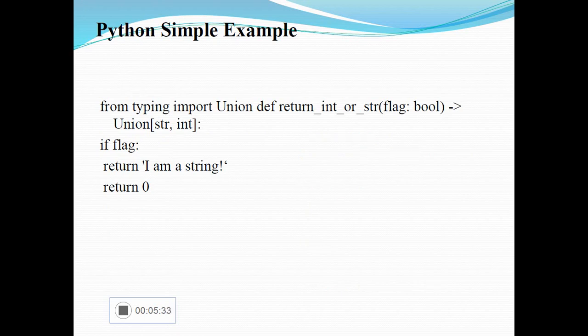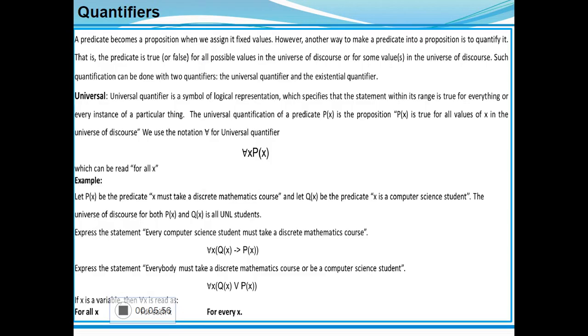Dependent type program using Python example: from typing import Union, def div return int or string, which takes one argument flag of boolean type. If flag, then return string data, otherwise it returns integer. Based on the boolean variable flag, the output of the execution will differ. This is another example for dependent type programming.